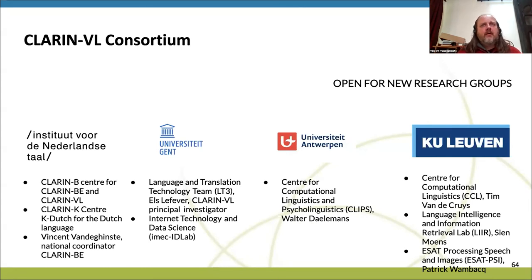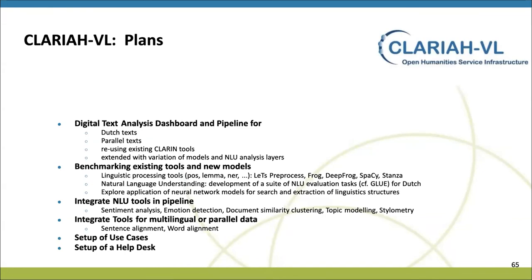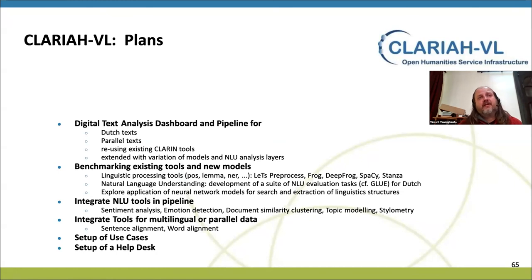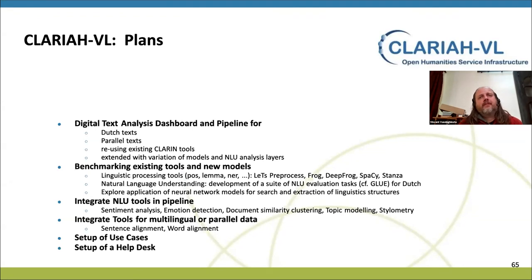A few of these groups are involved in the Clarin Flanders proposal. The project is just beginning, so we only have plans and no results yet. Our plans are to wrap up all the tools and research aspects we currently have and turn them into web services so they can easily be used by Clarin users or humanities users without much technical background. We also want to benchmark different alternatives — for instance, for Dutch there are different taggers available, and we need to compare which one is best or easiest to work with.